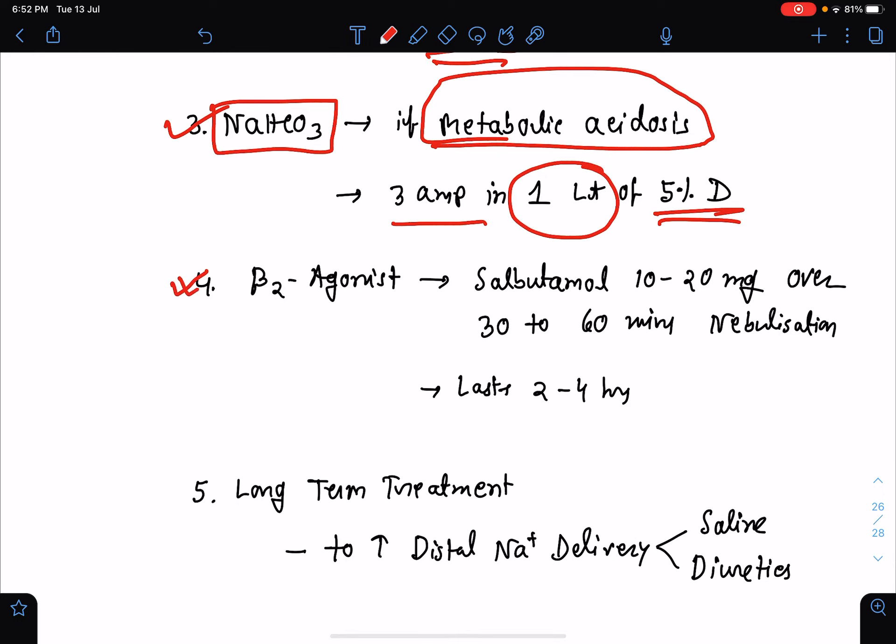Next option is beta-2 adrenergic agonist. For example, we can use salbutamol 10 to 20 milligram over a period of 30 to 60 minutes as continuous nebulization. We need to do continuous nebulization for 30 to 60 minutes. The action lasts for 2 to 4 hours, so we may need to repeat the nebulization.